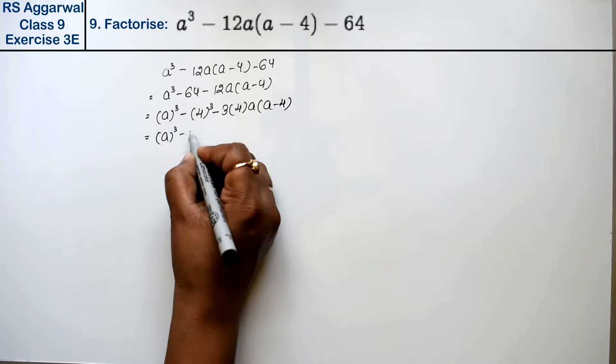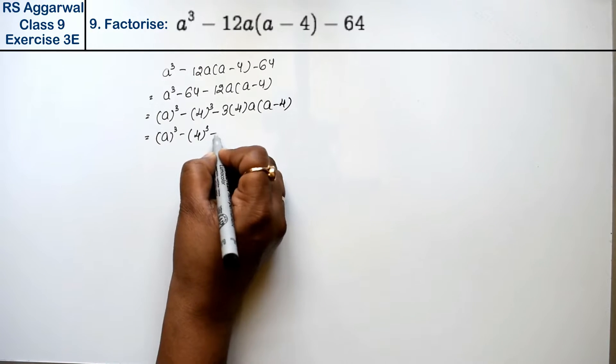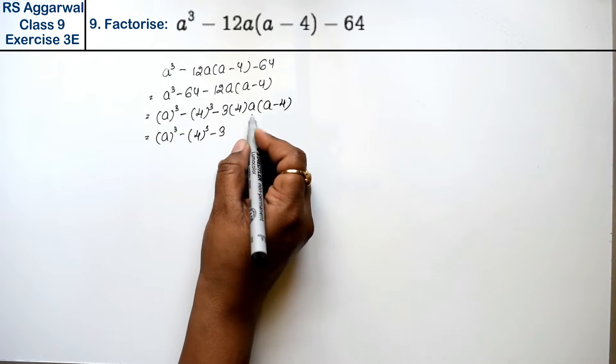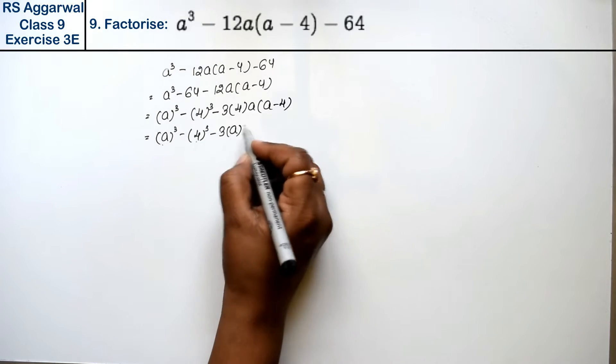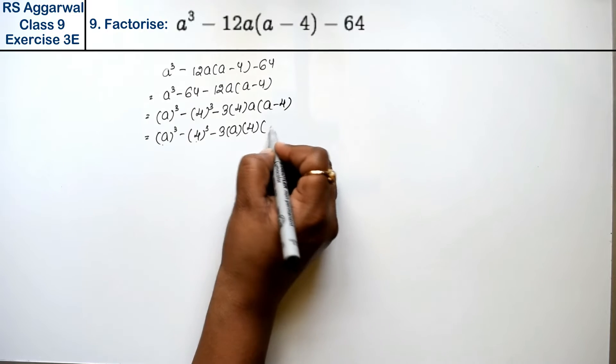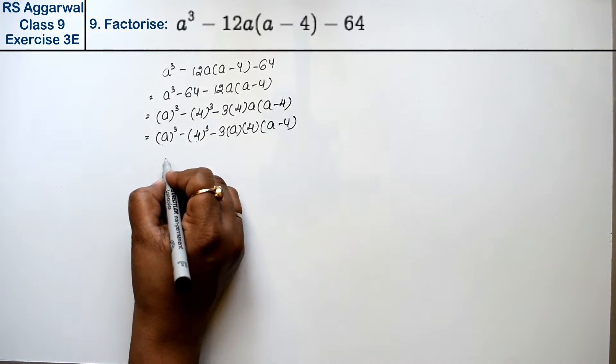Now see, this a³ is a³, this is 4³, minus 3. Now a will come first because here a is a, b is 4, so in the place of b is 4, we have (a - 4).